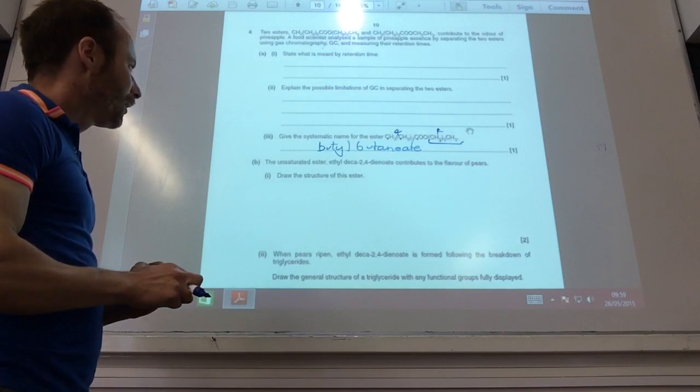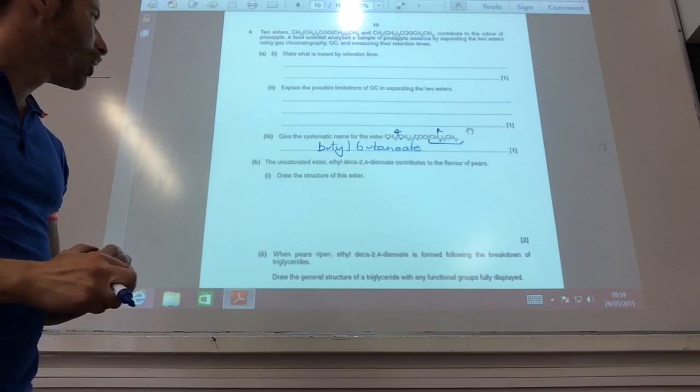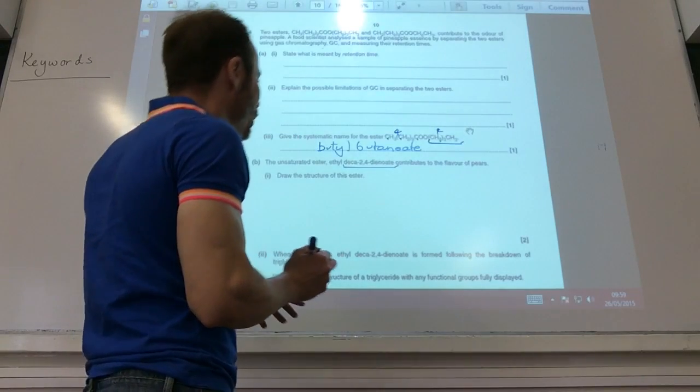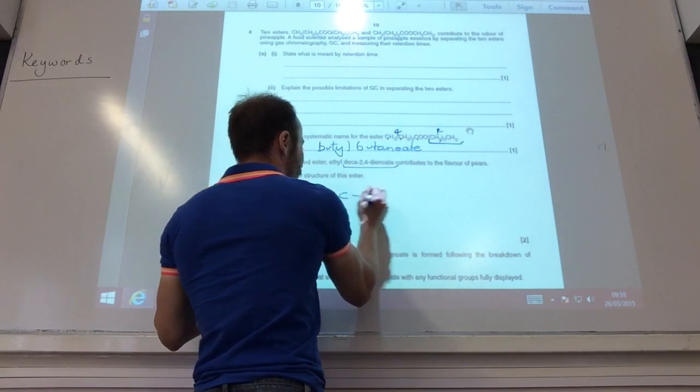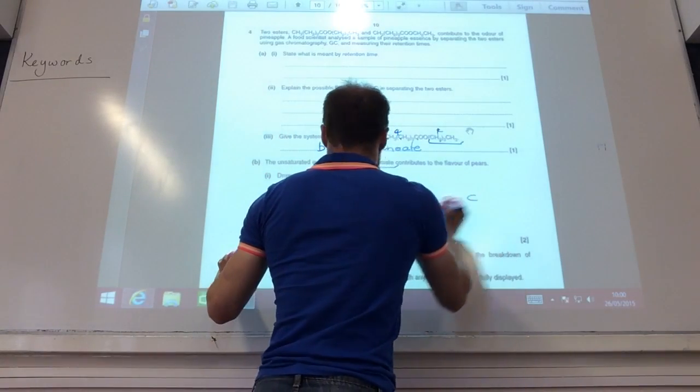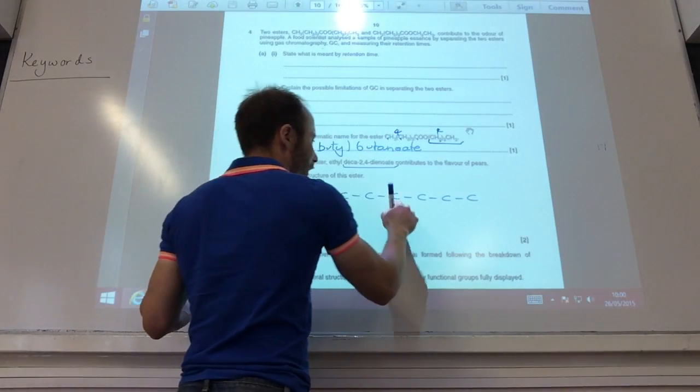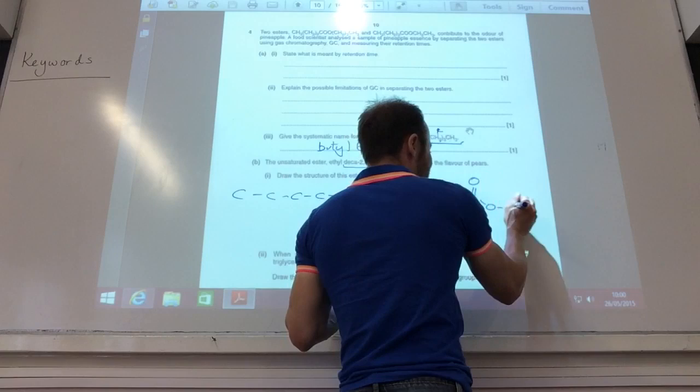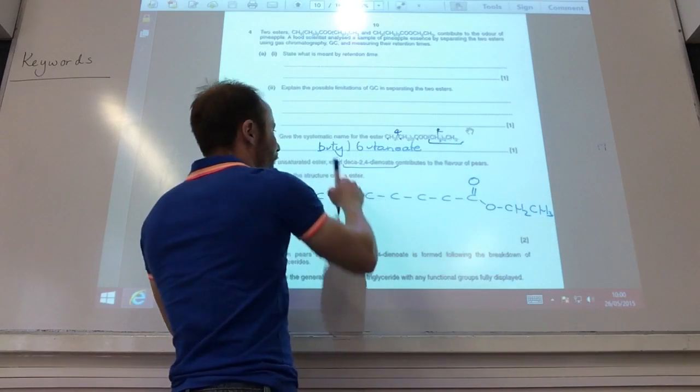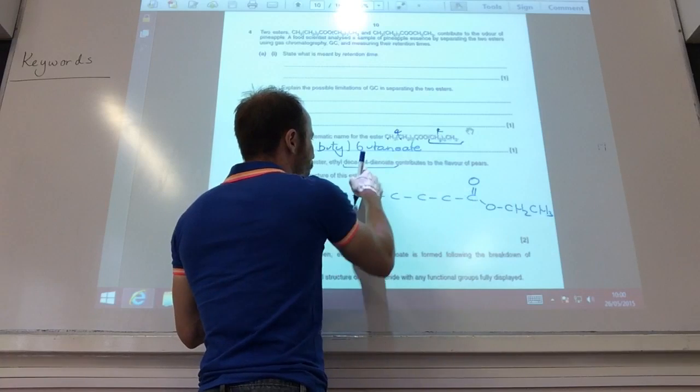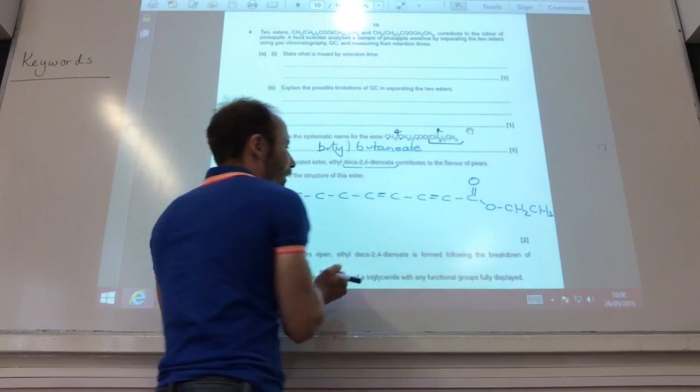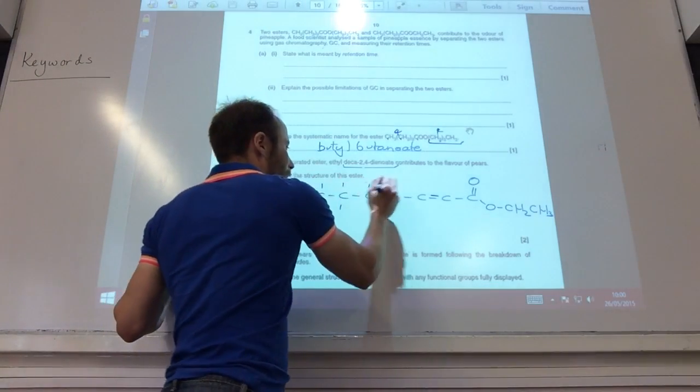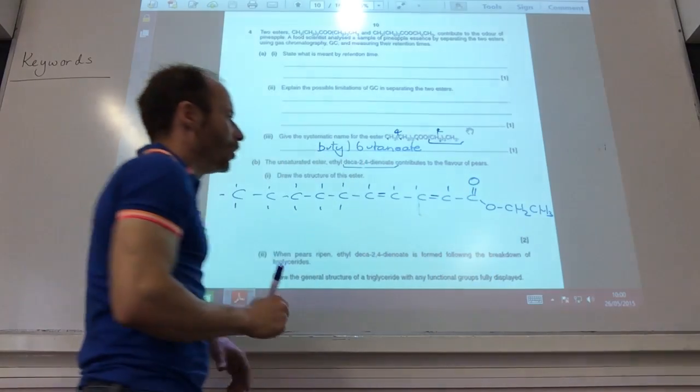The unsaturated ester contributes to flavor pairs, draw the structure of that ester. So deca, one, two, four, sorry two, four dienoate. I've got ten carbons. One, two, three, four, five, six, seven, eight, nine, ten. Ten carbons that come from the acid. This is my ethyl group for the ten carbons. So two, four dienoate. That's number one, that's number two, that's number three. And then you just fill in your hydrogens.